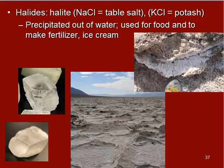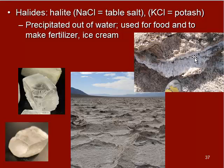Next are halides — these are kind of the salts. An example is table salt or halite, which is NaCl, and then KCl, which is potash. These precipitate out of water as well and are used in food, to make fertilizer, ice cream, and all sorts of things. You can see the crystal form and the way it breaks. Halite's crystal form and its cleavage are very similar to one another. Here you can see some halite in its natural environment — this is a salt flat in Death Valley National Park, where water drains in and then evaporates, leaving the salts behind in the basin.